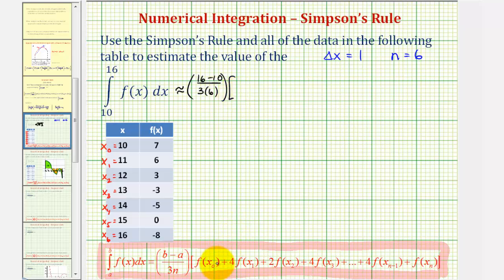Times, notice the pattern here for Simpson's rule, the first is just f of x sub zero, which in our case would be f of ten, plus four times f of x sub one, or f of eleven, plus two times f of x sub two, which is f of twelve, plus four times f of x sub three, which is f of thirteen.